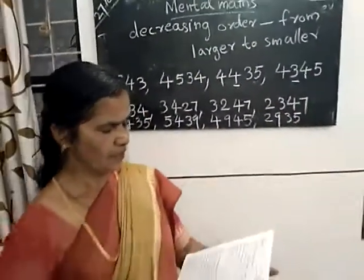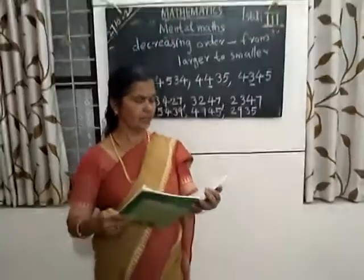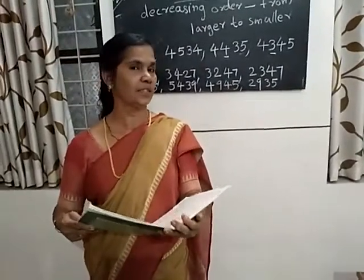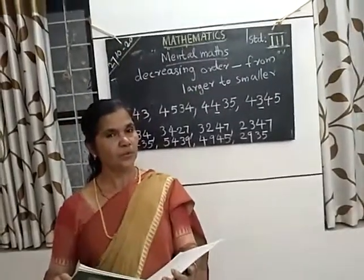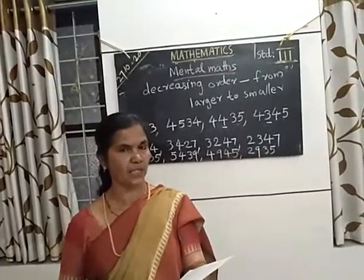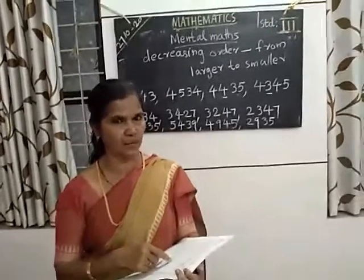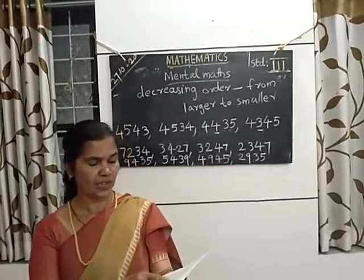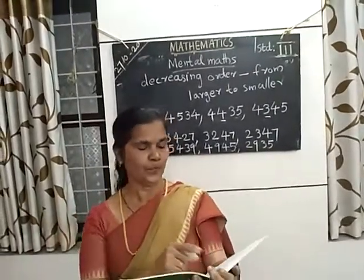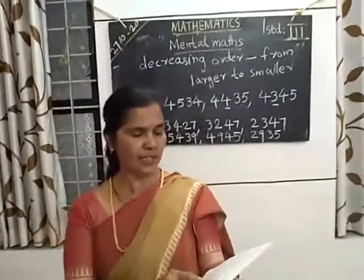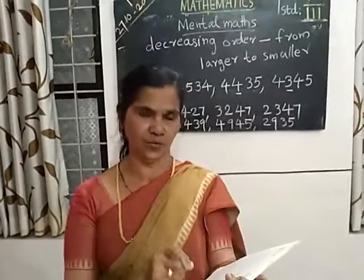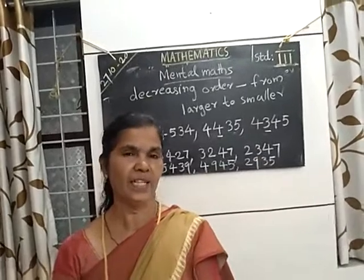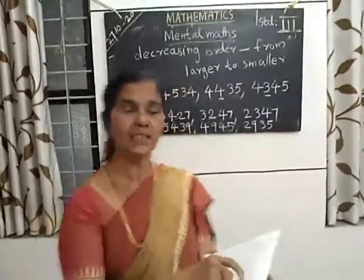Understand? Then you look at the next question. The thousands place — 8,000 is the largest number, so you write first the largest number: 8,634. Then look at the next: 7,000 is there, so you write 7,842. Next, 4,000 is there, so you write 4,364. The smallest number is 3,987. Understand? This is decreasing order.